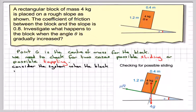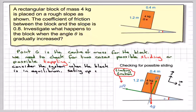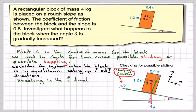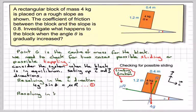So consider the system when the block is in equilibrium. We're going to set up an i and j, this is limiting friction. Setting up the i and j direction, so i being this way, j being this way. Resolving in the i direction, then in this direction we've got mu r acting this way and 4g sin theta acting this way. So 4g sin theta is equal to mu r, that's equation 1. And then resolving in the j direction, which is up and down, we're going to have r is going to be equal to 4g cos theta. This is equation 2.